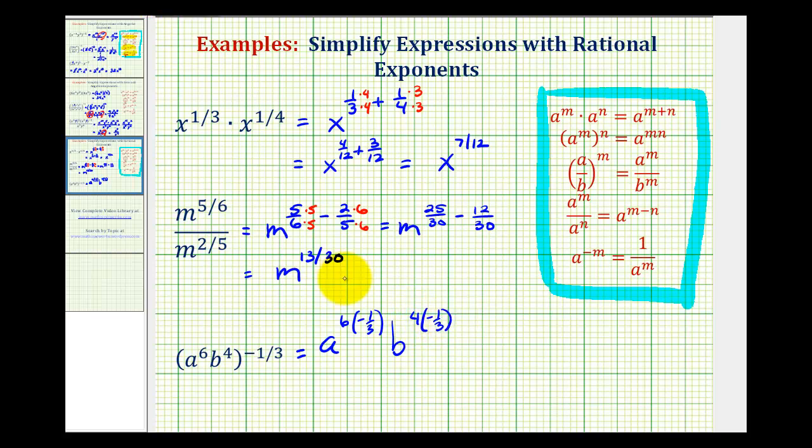And to determine these products, let's go ahead and put the six over one and four over one. So here, notice the three and the six simplify. This simplifies to one, this simplifies to two. So we have a to the negative two and b to the power of, nothing simplifies here, so we'll just have a power of negative four-thirds.